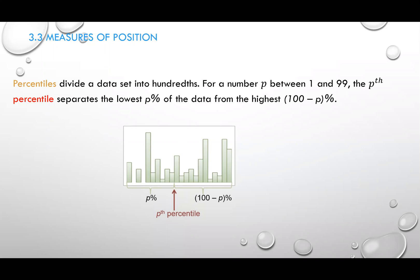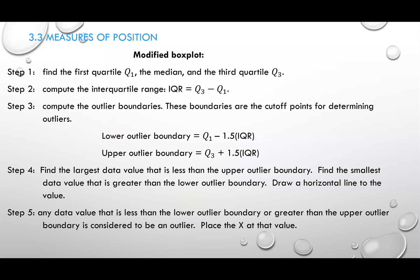The last thing we have is how to construct a box plot. For this textbook, we will use a modified box plot, which is slightly different from the traditional one in that it identifies outliers. To do the modified box plot, here are the steps: first, find Q1, the median, and Q3. Our calculator can help with this.